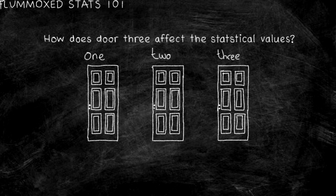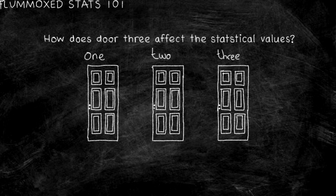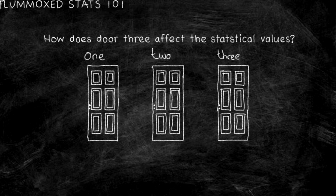The question in the middle of the two schools of thought, however, is do we disregard the empty door? On one hand, it is viable data, as to begin with you are just as likely to pick that door as you were the other two — a 33% chance to be precise. However, is it really viable when the value of the door is zero and you can't choose that door now? If the option of the third door is removed, can you still consider it viable in the statistical equation?